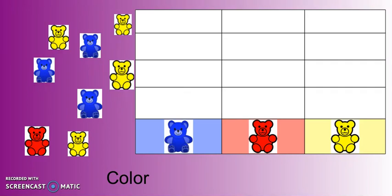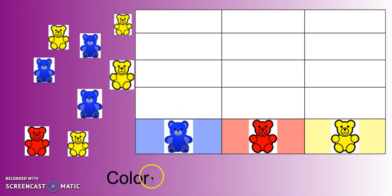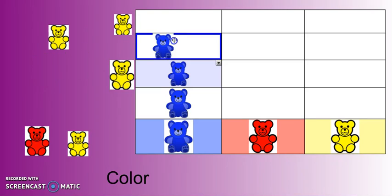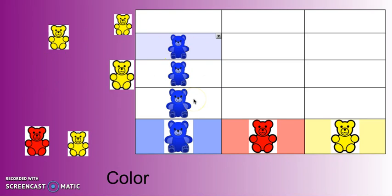The first way we're going to group our objects is by color. As you can see, I have a column for the blue bears, the red bears, and the yellow bears. We are going to group all of these items and figure out how many of each color we have. First we're going to start with the blue bears. One, two, three. We have three blue bears.